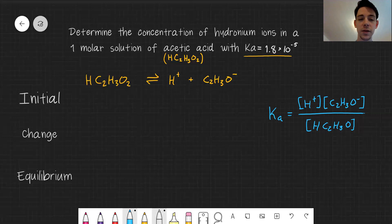We'll solve for that later. So initially we have one molar solution of our acetic acid. We have no hydronium and no acetate initially.